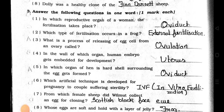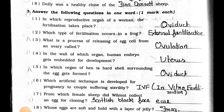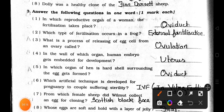Now see Main 3: Answer the following questions in one word, one mark each. Number 1: In which reproductive organ of a woman does fertilization take place? Answer is Oviduct. Number 2: Which type of fertilization occurs in a frog? Answer is External fertilization. Number 3: What is the process of releasing egg cells from an ovary called? Answer is Ovulation.